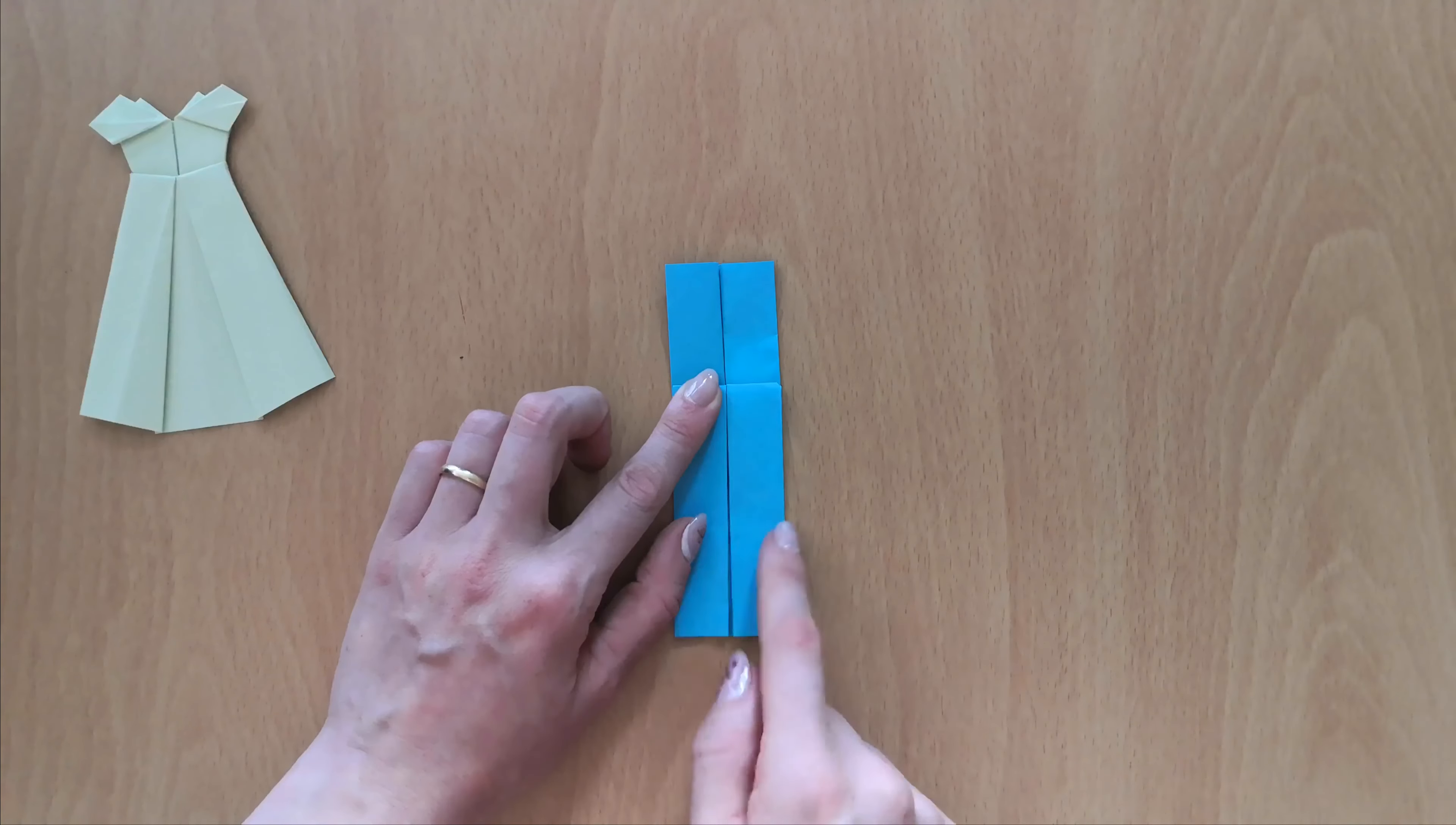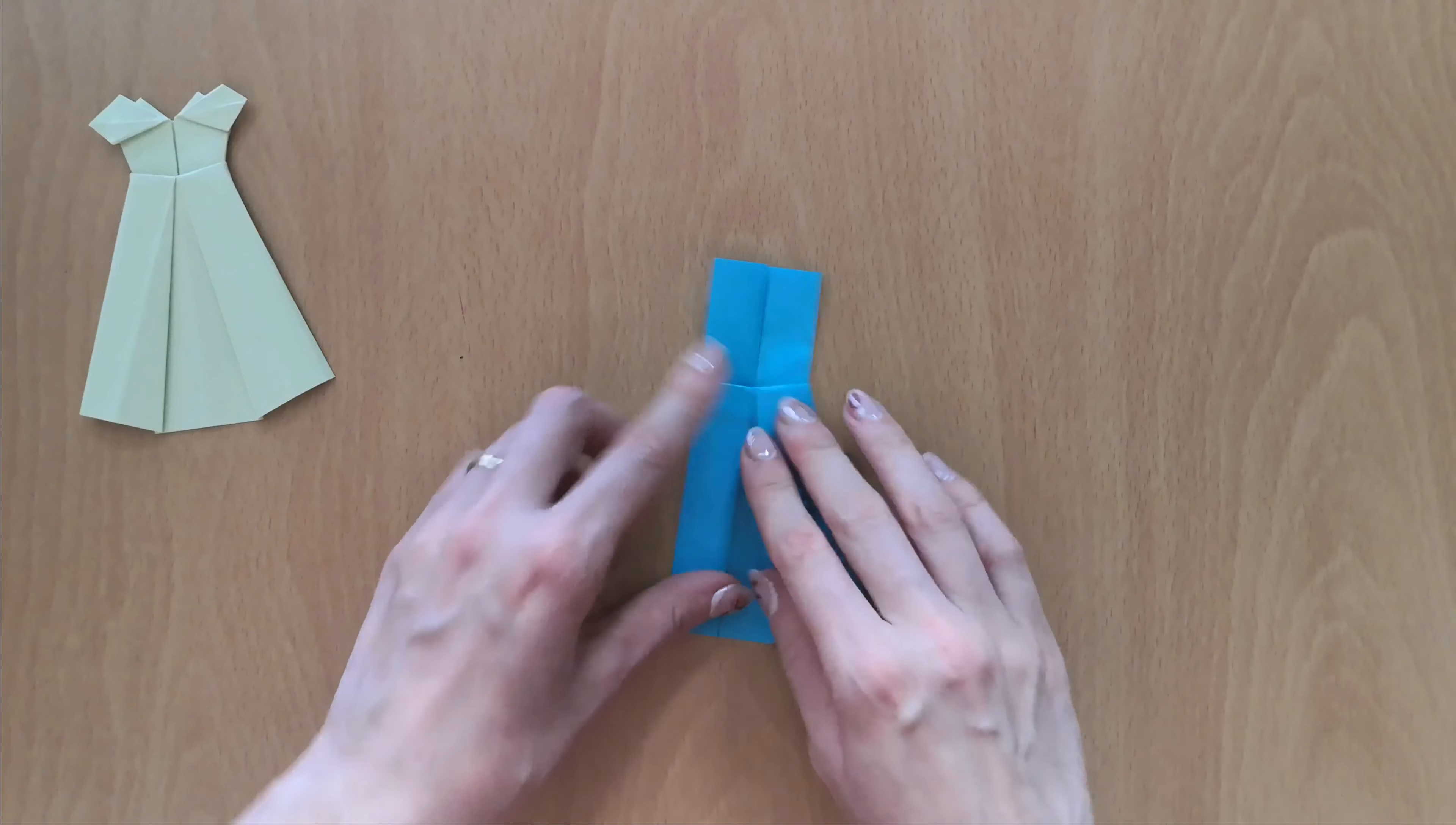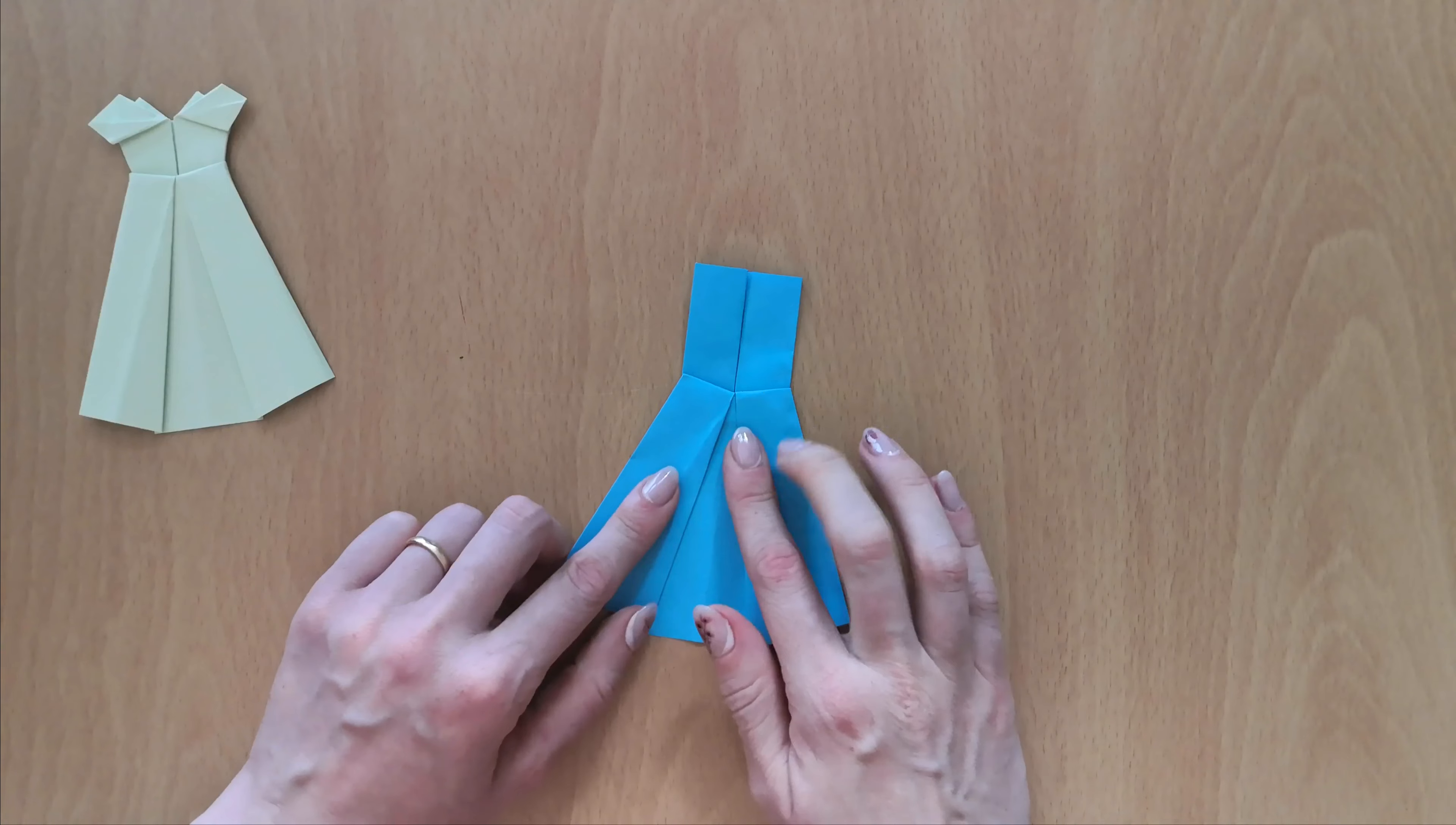And we'll start by folding the bottom of our dress. So for this, you will fold the upper layer. Take the upper layer of the paper and pull it out as far as it goes. And once it stops, just press it down. And do the same on the left side.